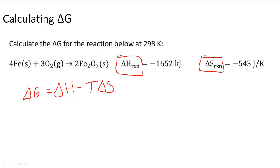But because we're working in kilojoules, we're going to change this to kilojoules as well. So when we convert this, it's going to become negative 0.543 kilojoules per Kelvin.